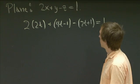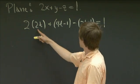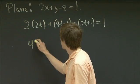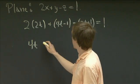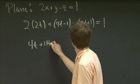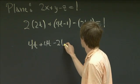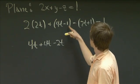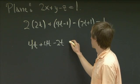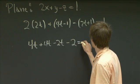So if we expand this out, we get 4T plus another 4T minus 2T. And we get minus 1 minus another one. So we get minus 2 equals 1.